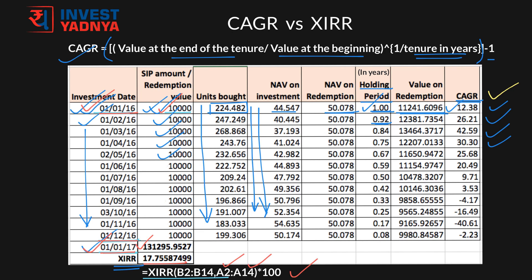Friends, CAGR is something that can be used to calculate annualized returns of a single investment, whereas XIRR — that is, internal rate of return — can be used to find out the collective CAGR of your investments. Both these formulas, CAGR and XIRR, can be used in Excel.